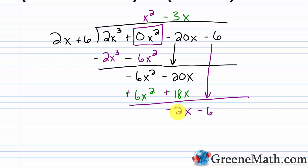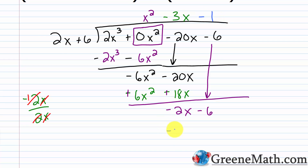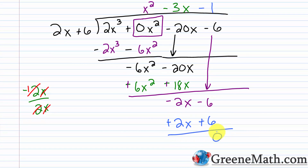Negative 6x squared plus 6x squared cancels to 0. Negative 20x plus 18x gives negative 2x. I bring down the last term, which is negative 6. My leading term 2x goes into negative 2x: negative 2x over 2x gives negative 1, and x over x is 1, so this is minus 1. Negative 1 times 2x is negative 2x, and negative 1 times 6 is minus 6. Subtracting: negative 2x plus 2x is 0, and negative 6 plus 6 is 0 — so there's no remainder. I get x squared minus 3x minus 1.